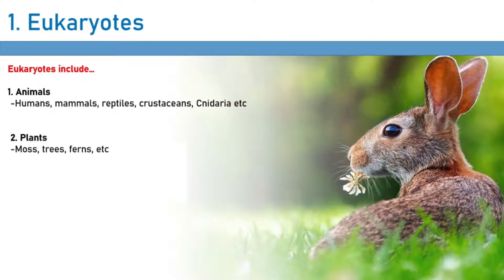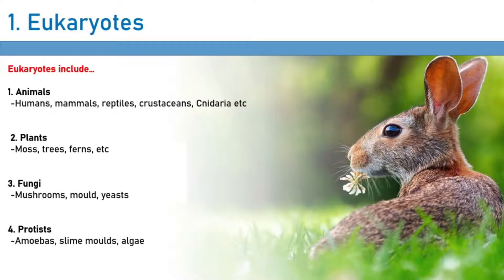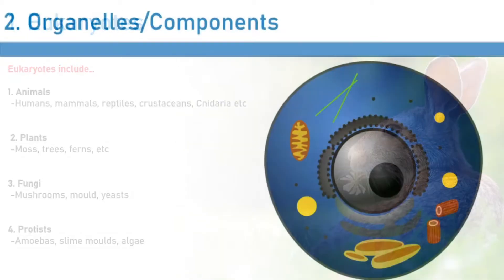Then we have plants — mosses, trees, ferns — all eukaryotes. People don't usually have trouble identifying animals and plants as eukaryotes, but they get confused with fungi. Mushrooms and molds are generally recognized, but yeasts trip people up because they're microscopic. However, yeasts are eukaryotic — a yeast cell does have organelles. Finally, protists are also eukaryotes despite being unicellular. Examples of protists include amoebas, slime molds, and algae. Make sure you can identify all these cells as eukaryotic.